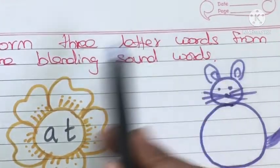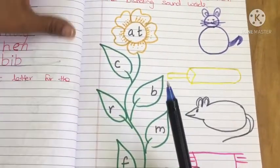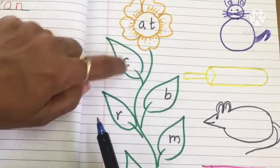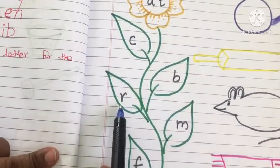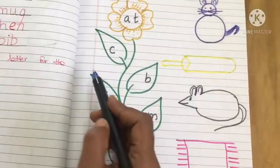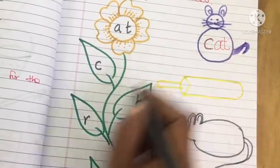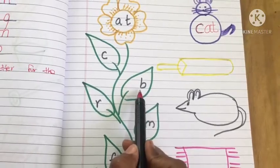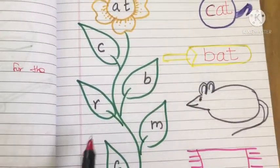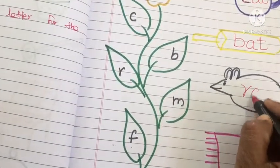Form three-letter words from the blending sounds given. Here the blending sound is given and we have to make three-letter words. The blend is AT. We can form: B + AT = bat, R + AT = rat. Write it.